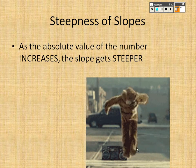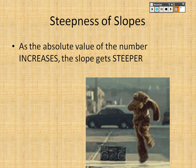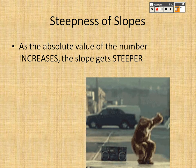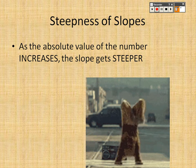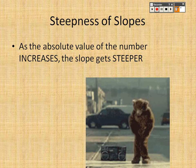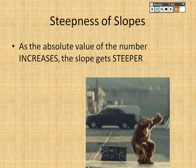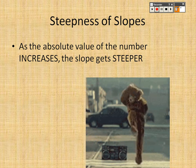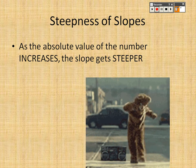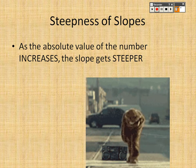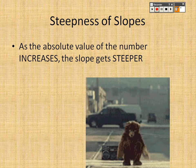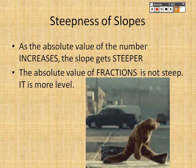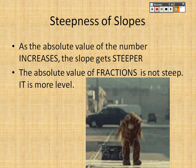As the absolute value of the number increases, the slope gets steeper. The bigger the absolute value of a number, the steeper it's going to be. If the slope is a fraction, then it's not going to be steep — it's going to be wider.